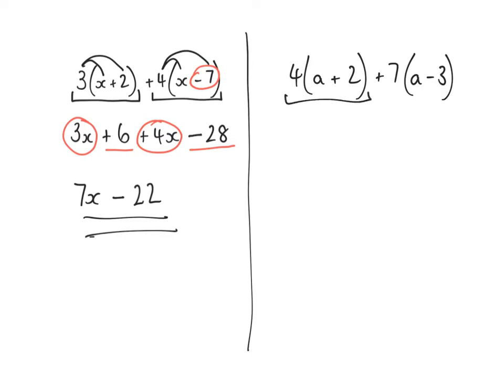So you should have expanded the first bracket, remembering to multiply both of them. And don't forget, this is a negative 3. 7 times negative 3 is negative 21.